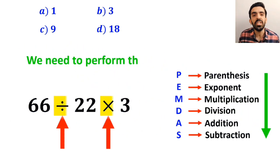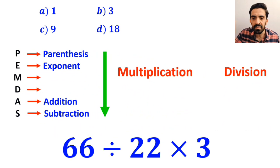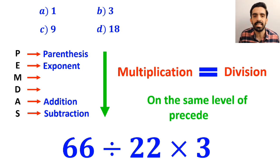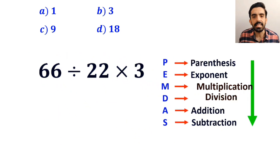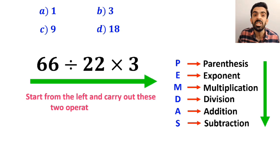Now we need to perform the division and multiplication. However, it's very important to keep in mind that multiplication and division are on the same level of precedence. In this case, the best approach is to start from the left and carry out these two operations in order.